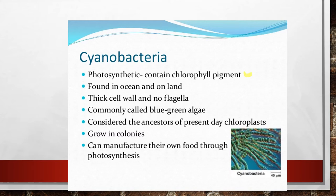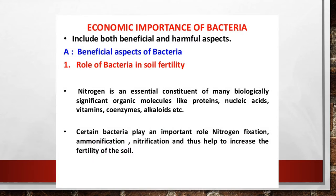Cyanobacteria, also called blue-green algae, are photosynthetic in nature and contain a pigment responsible for photosynthesis called chlorophyll. They are found in the ocean as well as on land. They have a thick cell wall and no flagella. They are considered one of the ancestors of present-day chloroplasts. They grow in groups, clusters, or colonies, and since they have chlorophyll, they can manufacture their own food — they are autotrophic.